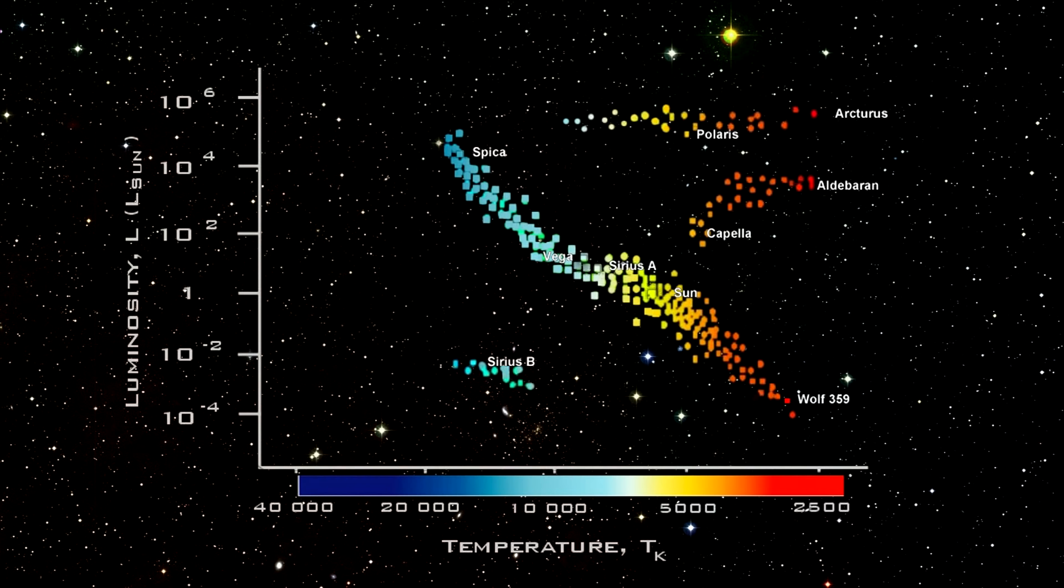But Hertzsprung and Russell meticulously plotted all the stars with known distance and luminosities. And they got this. Here we see that most stars fall on the diagonal line, from the upper left, hot, blue, luminous stars, down to the lower right, cooler, dimmer, red stars. But there is also a grouping of stars well below the main line, and two groupings of stars well above the main line. This is the Hertzsprung-Russell Diagram, or HR Diagram for short. It is one of the most important tools in understanding stars ever devised.